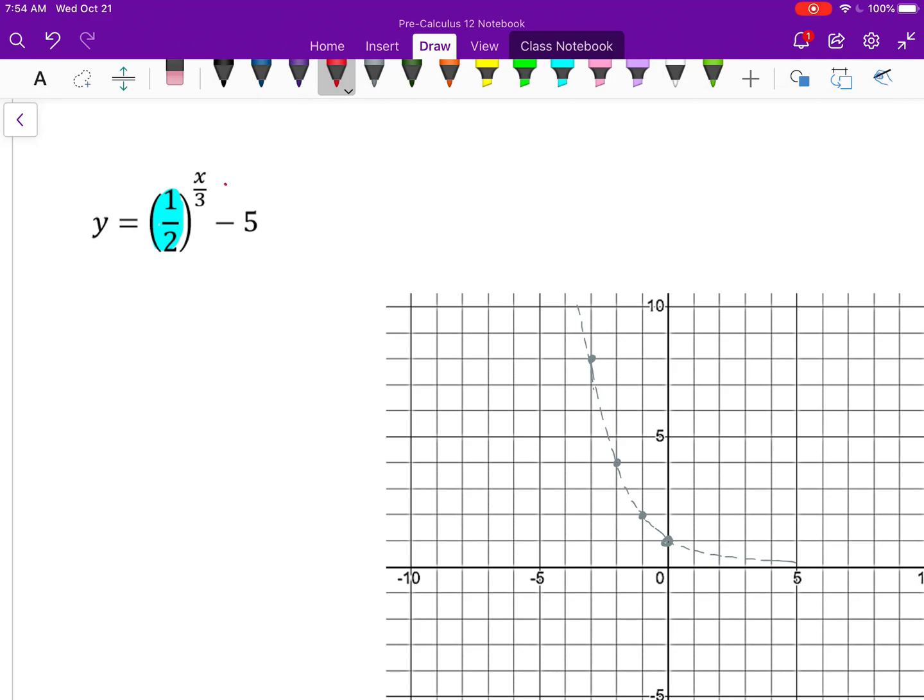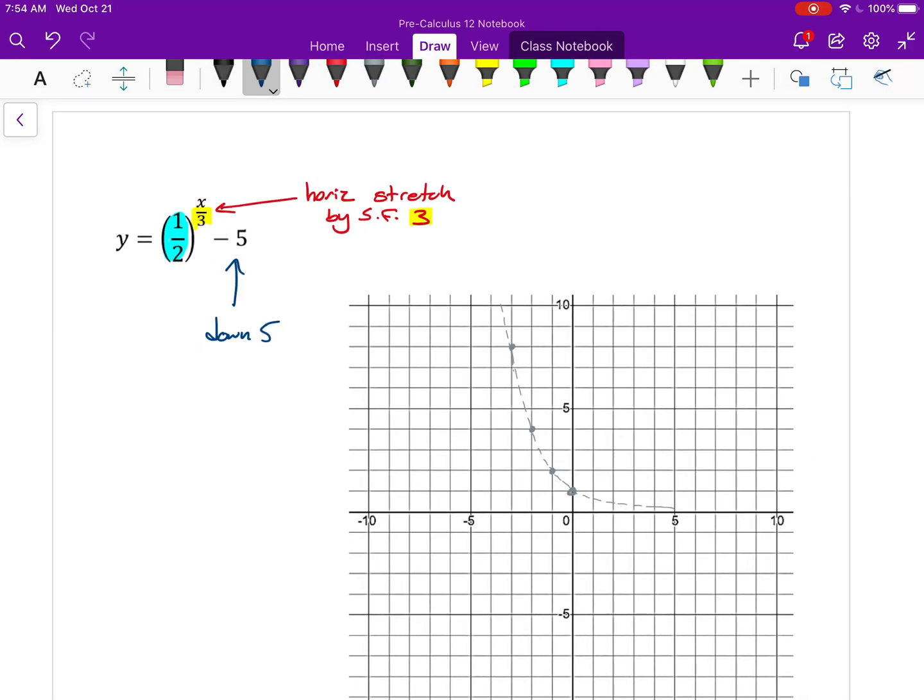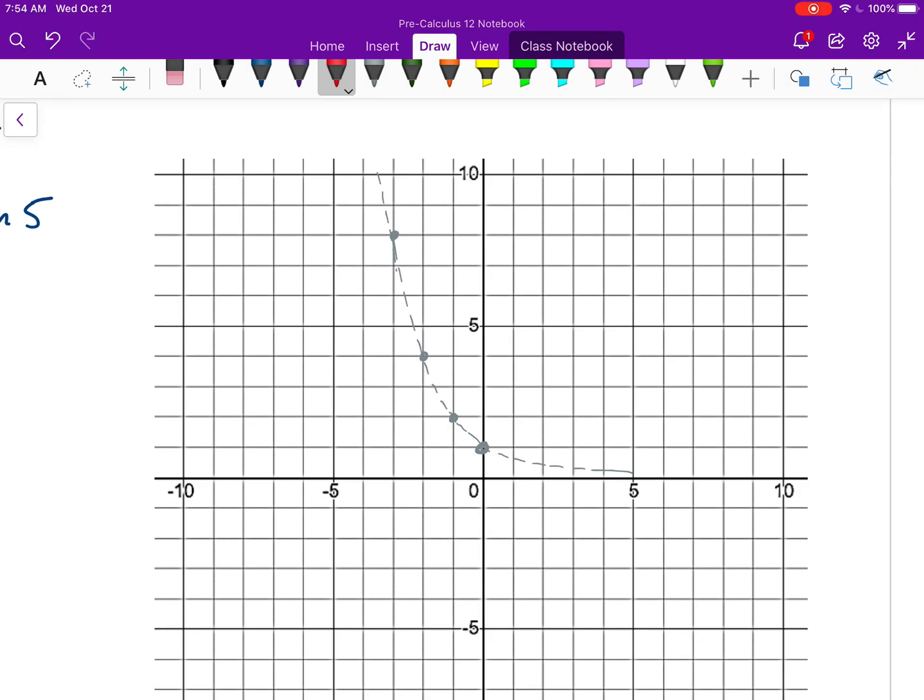And so what do I see here? Two transformations. X is being divided by 3, that's the same as x being multiplied by 1 third. That means there's a horizontal stretch by a scale factor of 3. So again, dividing by 3, same as multiplying by 1 third. And again, the scale factor is always the reciprocal of what's being multiplied to x. And then down 5. And so the horizontal stretch by a scale factor of 3, I'll show that in red first. I want to take all these points here and triple the x coordinates, so my y-intercept will not change but all the rest will.